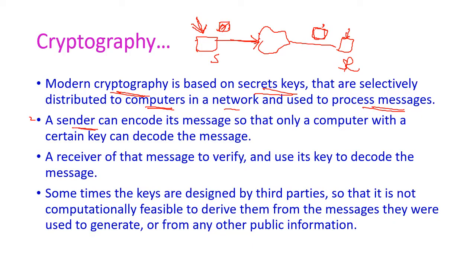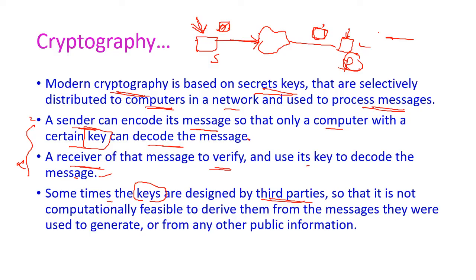The sender encodes its message so that only the computer with the correct key — which the receiver holds — can decode the message. The receiver decodes the message using their own key. Sometimes the secret keys are designed by third parties, and it is computationally not feasible to derive the keys from the message or from any public information.